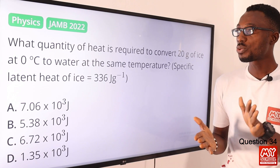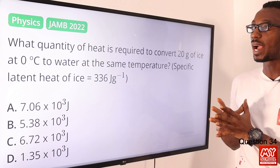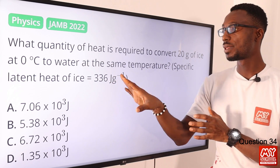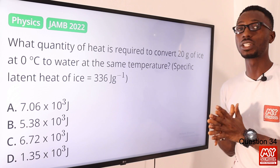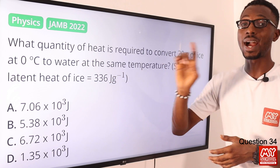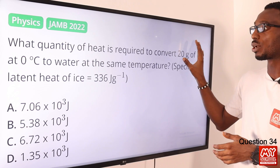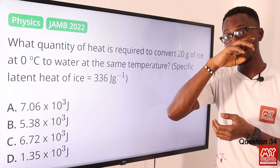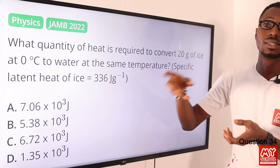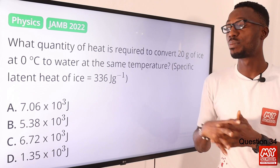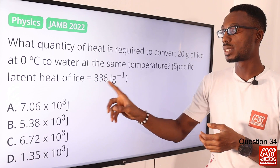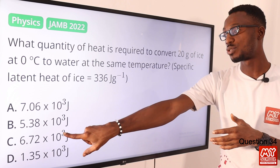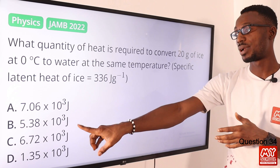Question 34. What quantity of heat is required to convert 20 grams of ice at 0°C to water at the same temperature, given that the specific latent heat of ice is 336 joules per gram? Note the units are joules per gram and grams — no conversion needed. Heat Q equals mass times specific latent heat: 20 times 336 equals 6,720 joules, or 6.72 × 10³ joules. The correct option is option C.